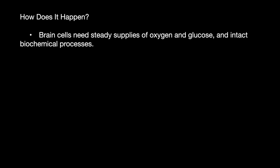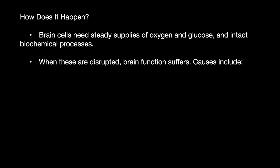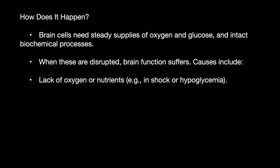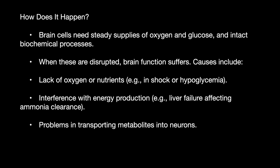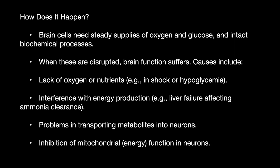The brain cells need a steady supply of oxygen and glucose, and a very stable environment around the neurons — an intact biochemical process. When this is disrupted, brain function suffers, including lack of oxygen and nutrients, interference with energy production, problems transporting metabolites into neurons, and inhibition of mitochondrial energy pathways.